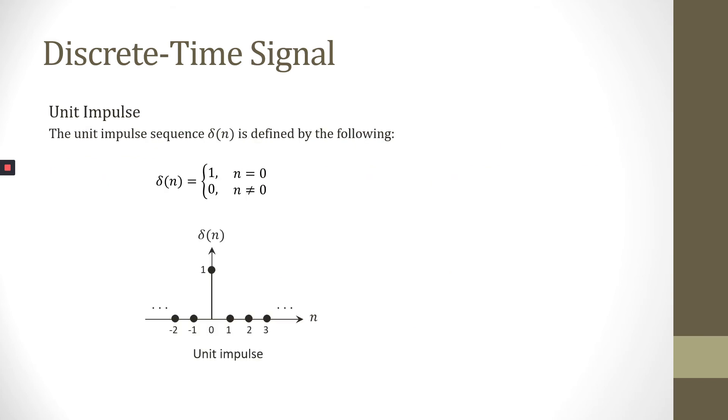The unit impulse sequence with this symbol δ(n) is equal to 1 or unity amplitude when n is equal to 0. While n not equal to 0, the value is 0. In words, the unit sample sequence is a signal that is 0 everywhere, except at n equal to 0, where its value is unity.